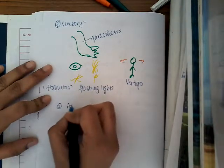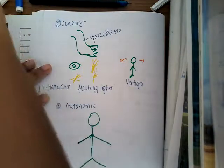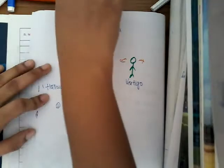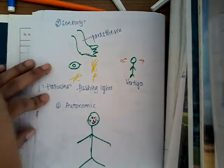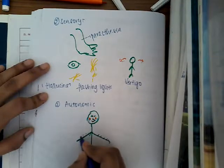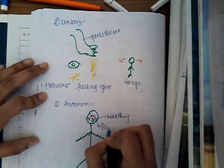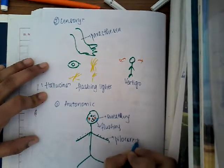The third category is Autonomic Features. In autonomic features, the person may have autonomic symptoms such as sweating, flushing, or pilo-erection where all his hair may get erected. These are the autonomic symptoms which can be seen.